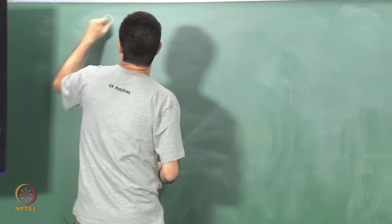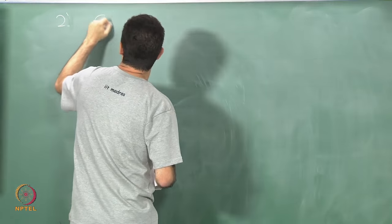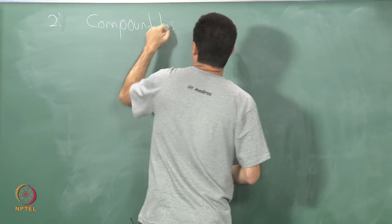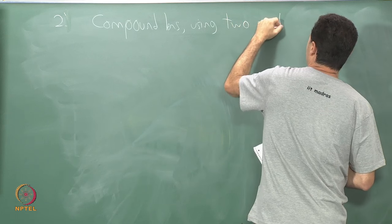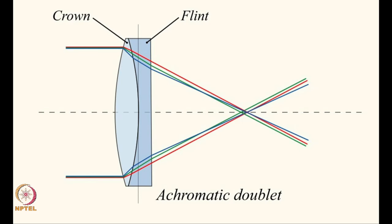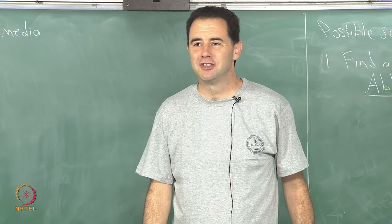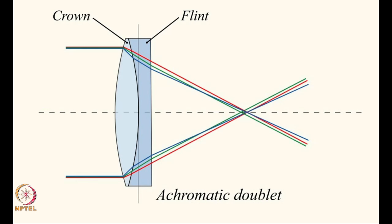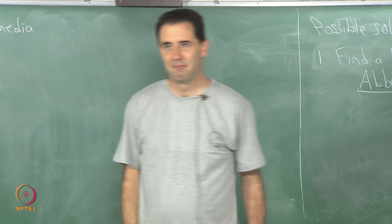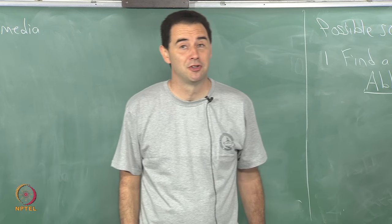A second solution is to form a compound lens using two different materials. This is commonly done in lens design: one material — crown glass — causes the wavelength separation, and another material — flint glass — is placed right up against it to try to bring the wavelengths back together. You can use two materials and play some tricks. It is a delicate art, and the result is called an achromatic doublet. Even in pictures it does not show perfect compensation, but it may greatly reduce chromatic aberration.